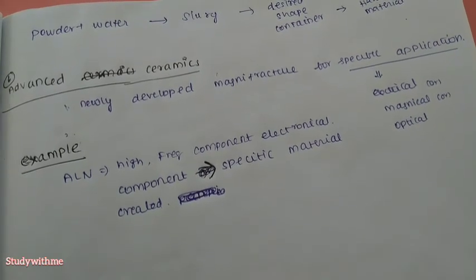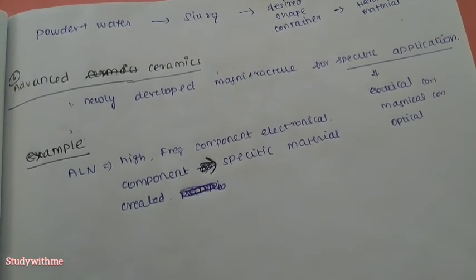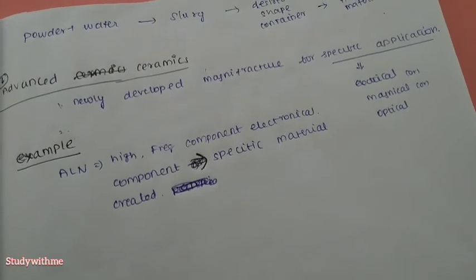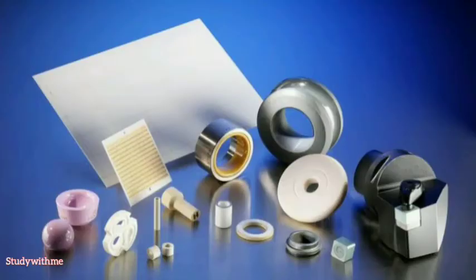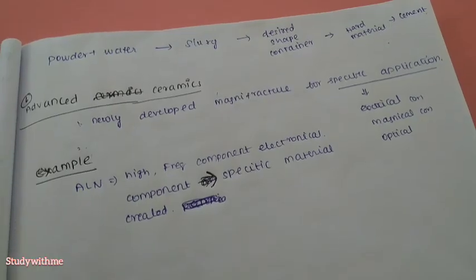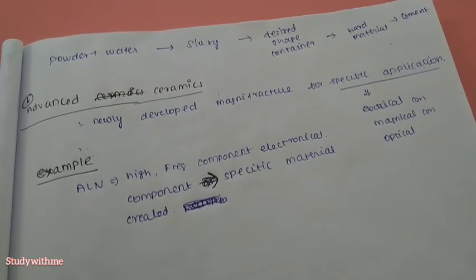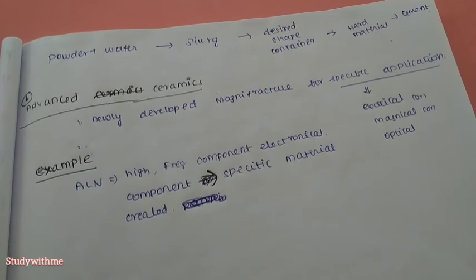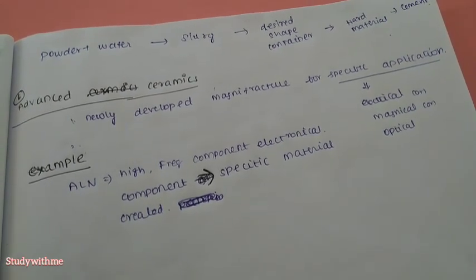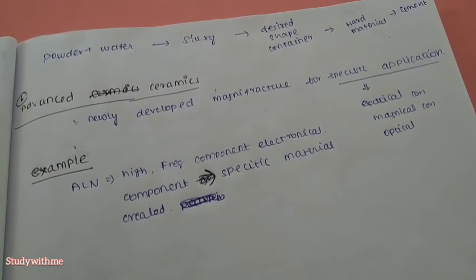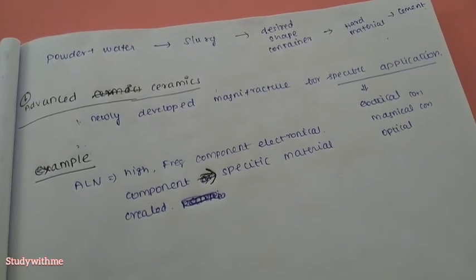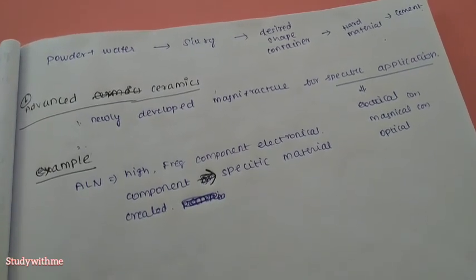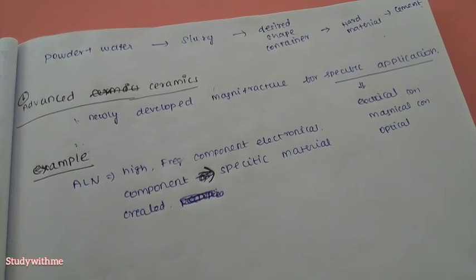Advanced ceramics are made from specific chemical components to create controlled properties. For more details on this topic in material science, see the comment section below. Subscribe to the channel — thank you, all the best.